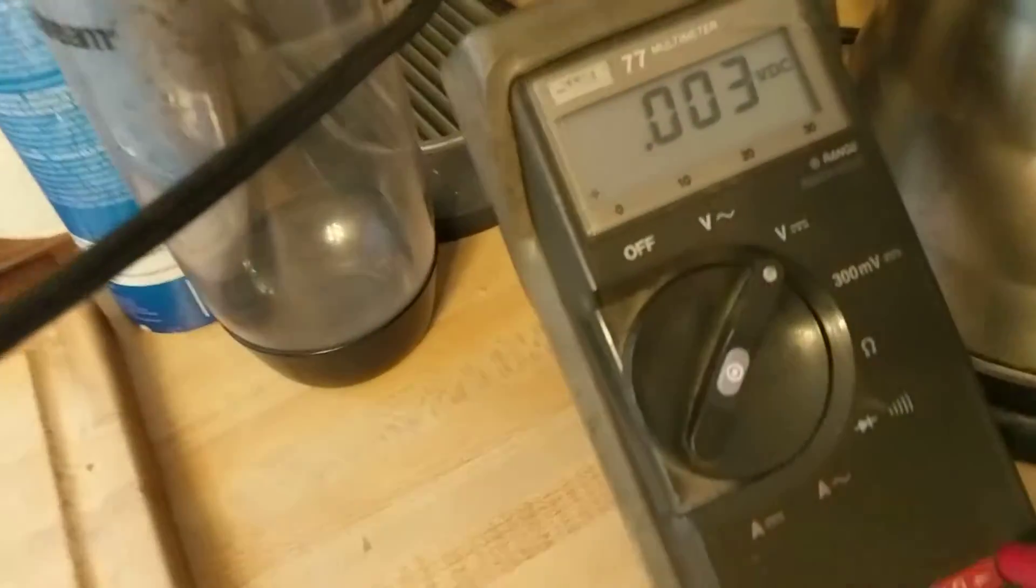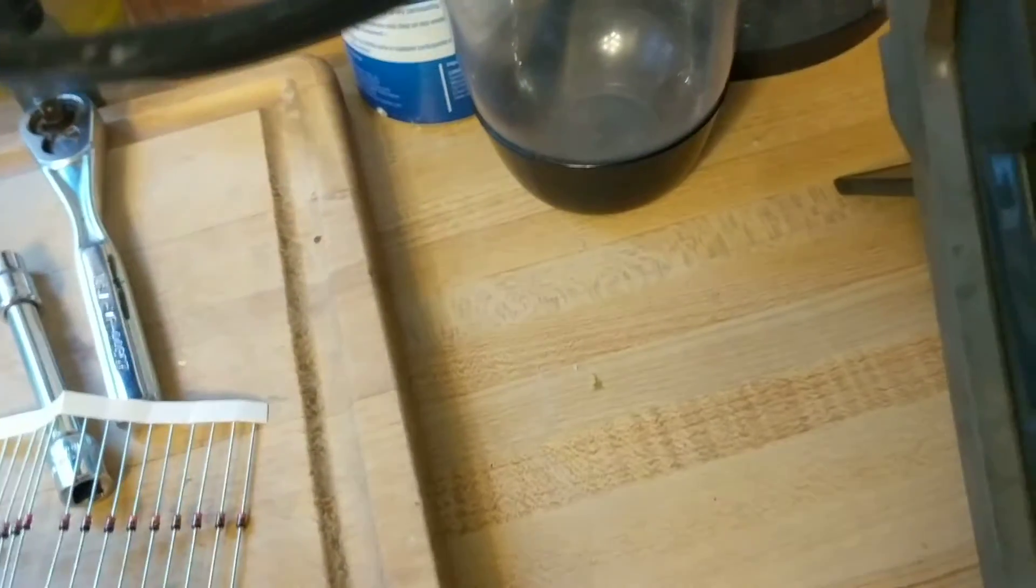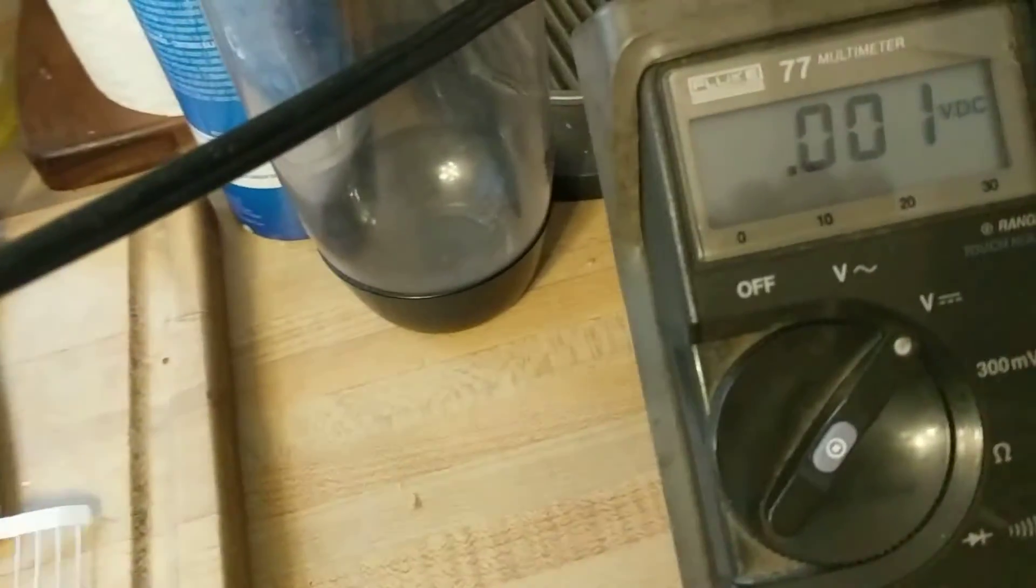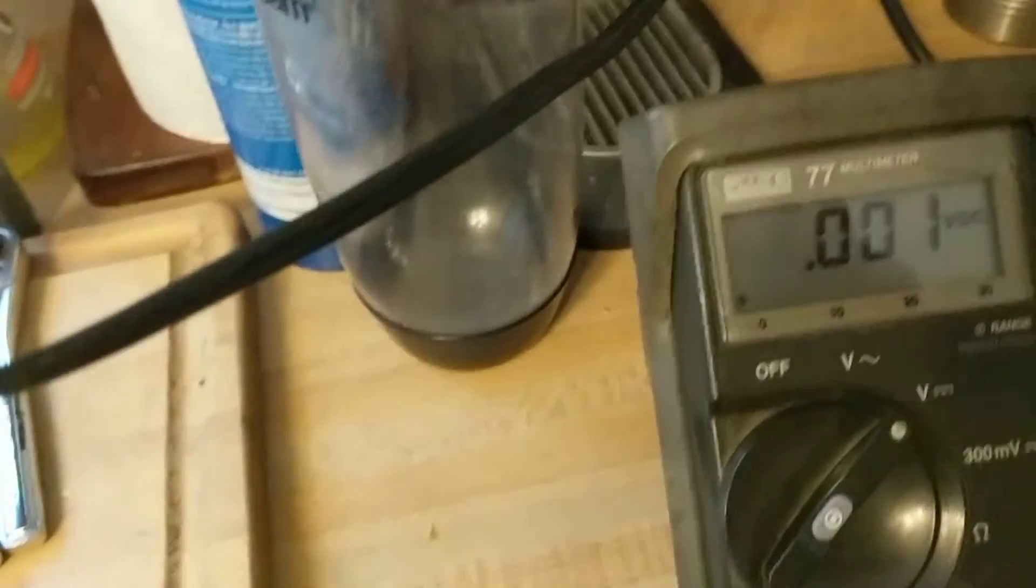And the voltage that I'm getting is 5 volts. I'm going to turn this off now because I don't want it any longer than it needs to be. And that's a 6 volt diode. So under load, the voltage is down to 5 volts.